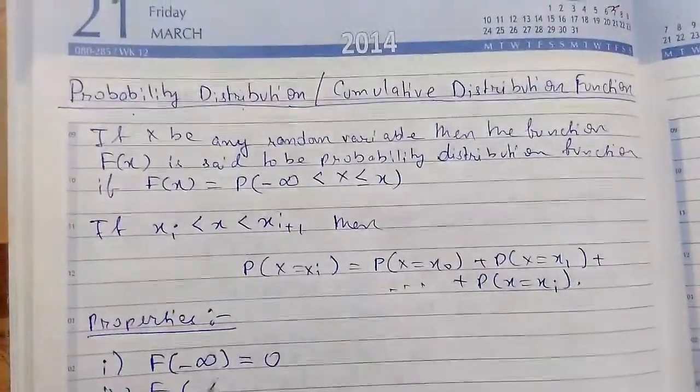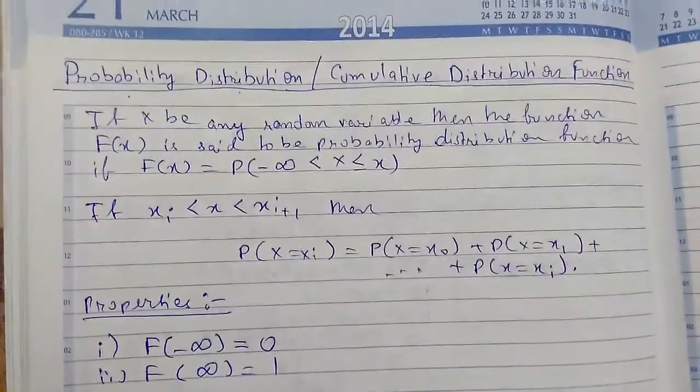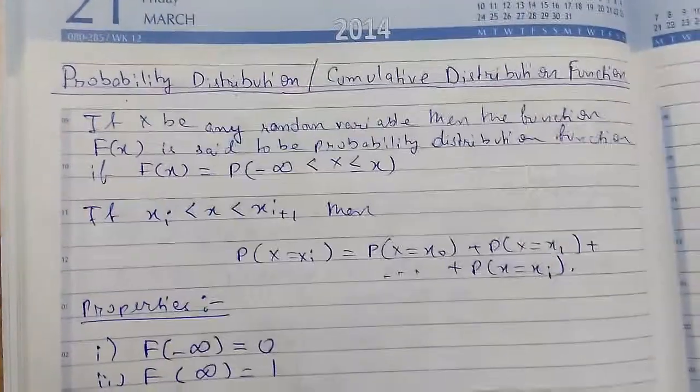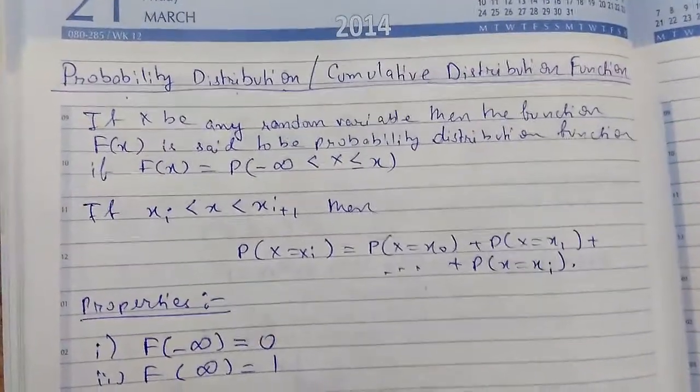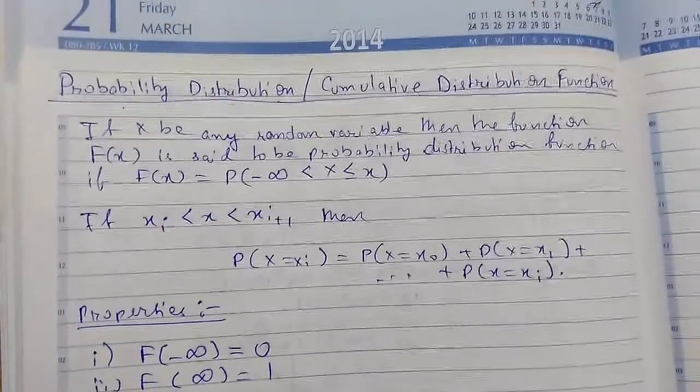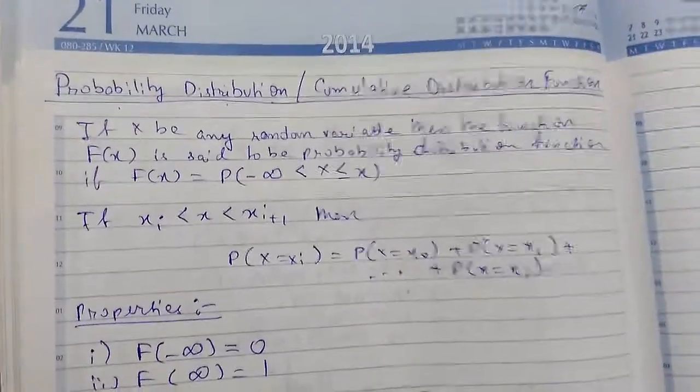And number 3, we have probability a less than X less than or equal to b equals F of b minus F of a.